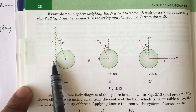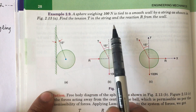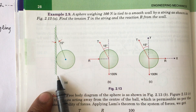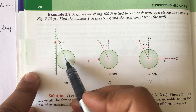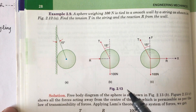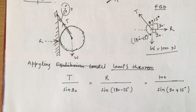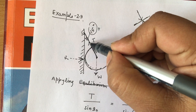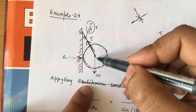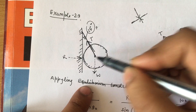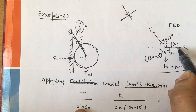The reaction always acts perpendicular to the wall. Since the wall is vertical, the reaction acts horizontally, perpendicular to the wall. This perpendicular reaction will pass through the intersection of the other two forces. Let me draw the free body diagram — we have the tension T in the string, reaction R from the wall, and weight W acting downward. Since W and R pass through this intersection point, the third force T will also pass through it.